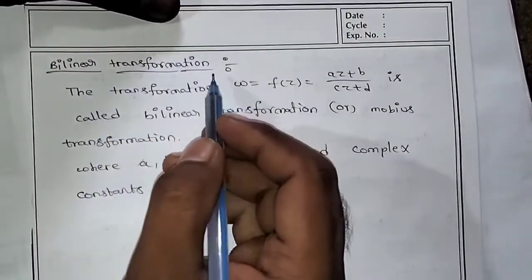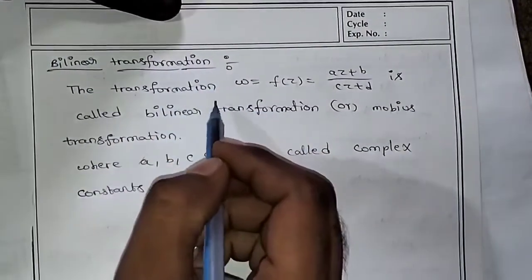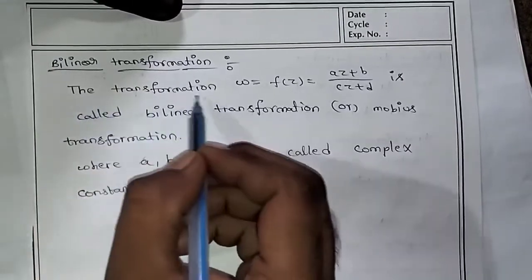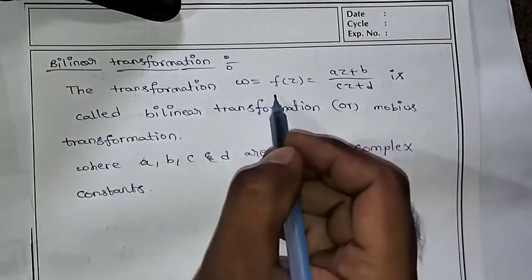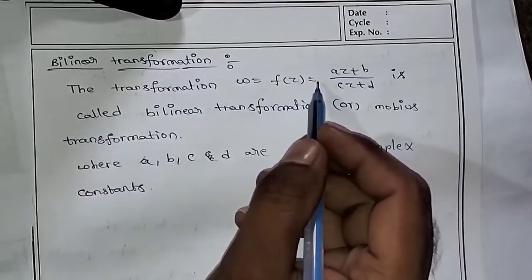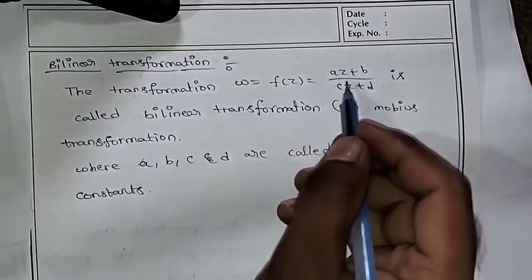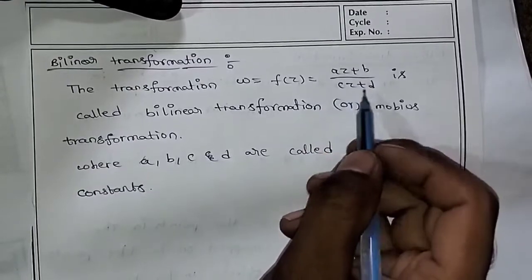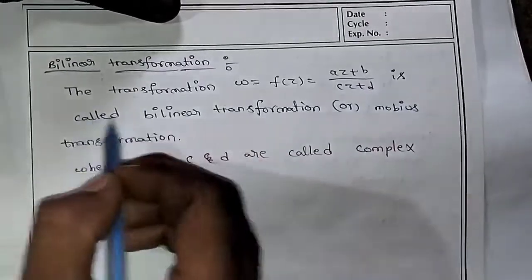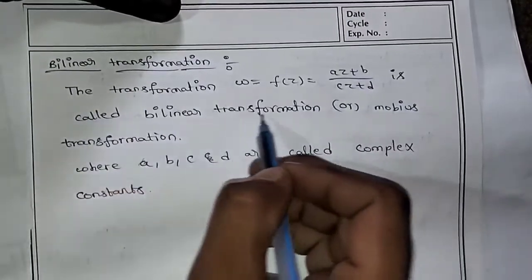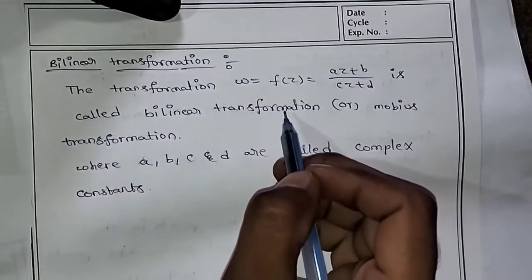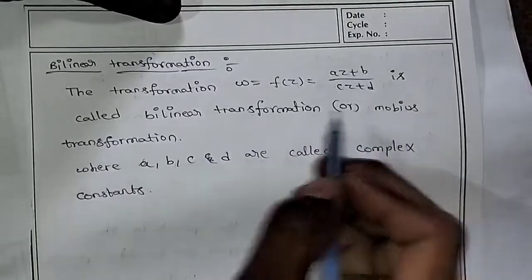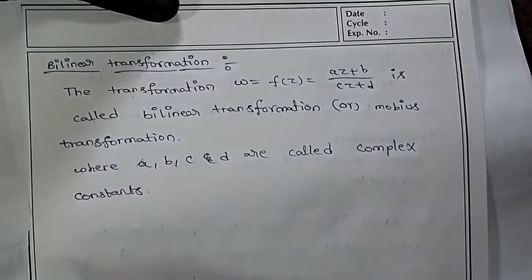Bilinear Transformation means the transformation W equal to F of Z, equal to Az plus B by Cz plus D, is called Bilinear Transformation or Möbius Transformation.